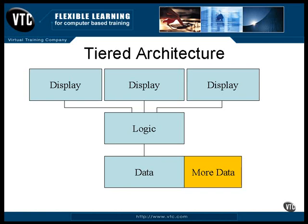It's the data access layer that needs to know where to get things and where to put things. The actual number of layers depends on the requirements of the specific application — you'll find situations where you actually have four, five, or even more layers.